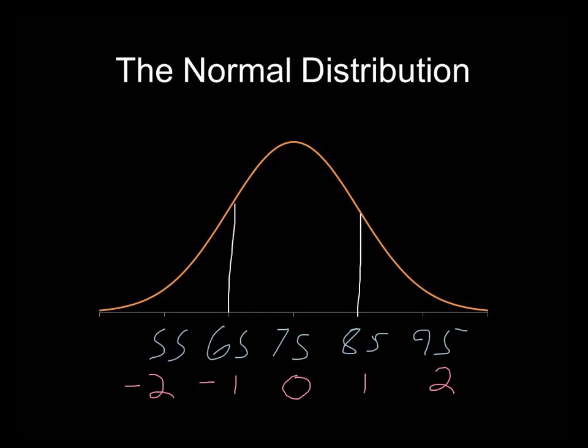About 13.6% of the scores fall between one and two standard deviations, both on the positive and negative side. And what that tells us is that more than 95% of the scores are going to fall between negative two standard deviations and positive two standard deviations.